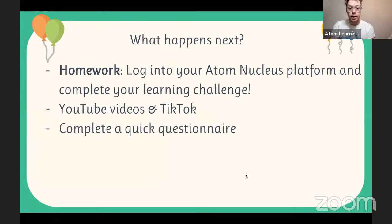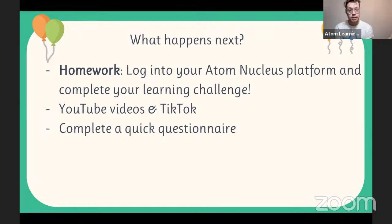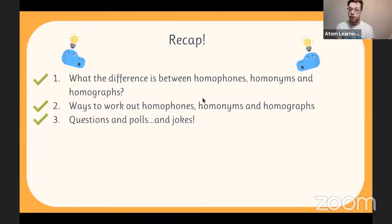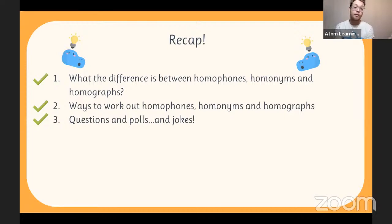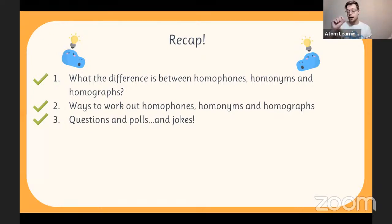What happens next? Remember to log into Nucleus and complete the learning challenge after this to lock in what we covered. You can also check out our YouTube and TikTok videos, and there should be a quick questionnaire when you leave. Recap: today we covered the difference between homophones — sound the same, spelt differently; homonyms — spelt the same, sound the same, different meanings; and homographs — written the same, pronounced differently, like row and row. Remember the A-I and A-E graphemes to help identify homophones.